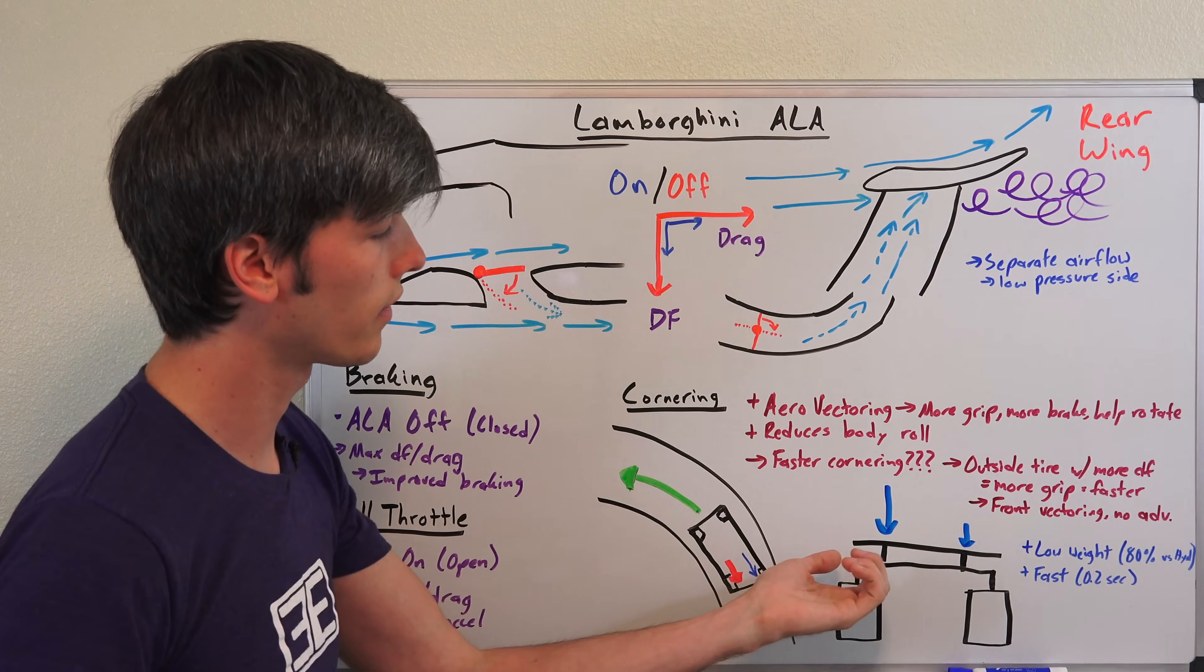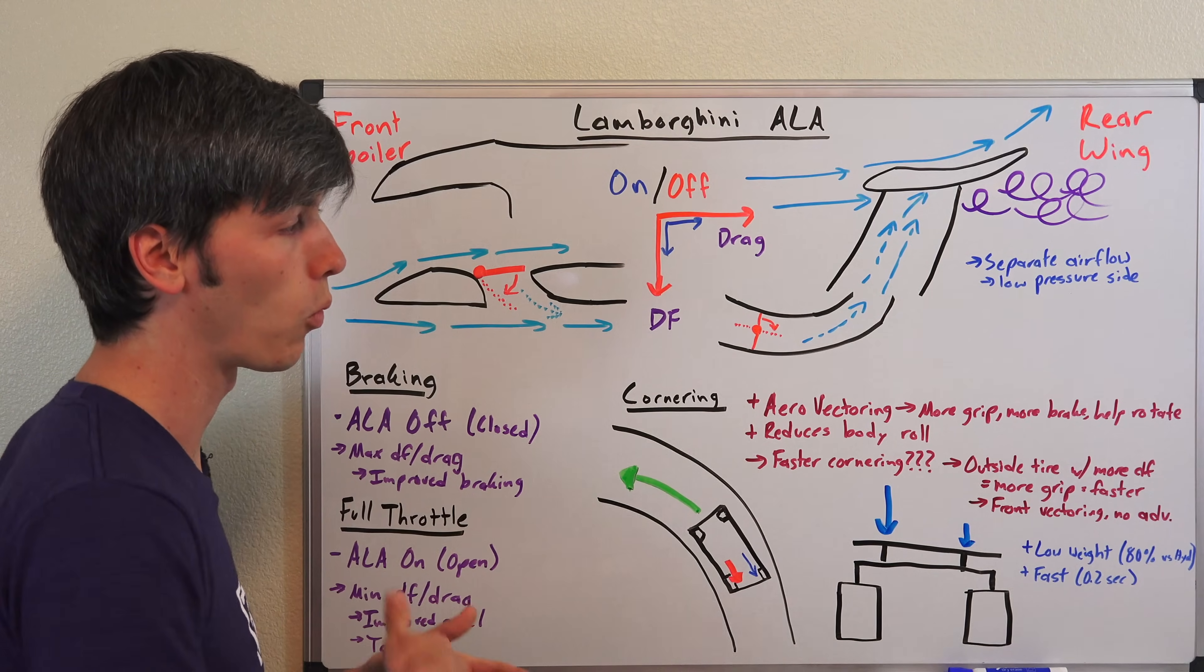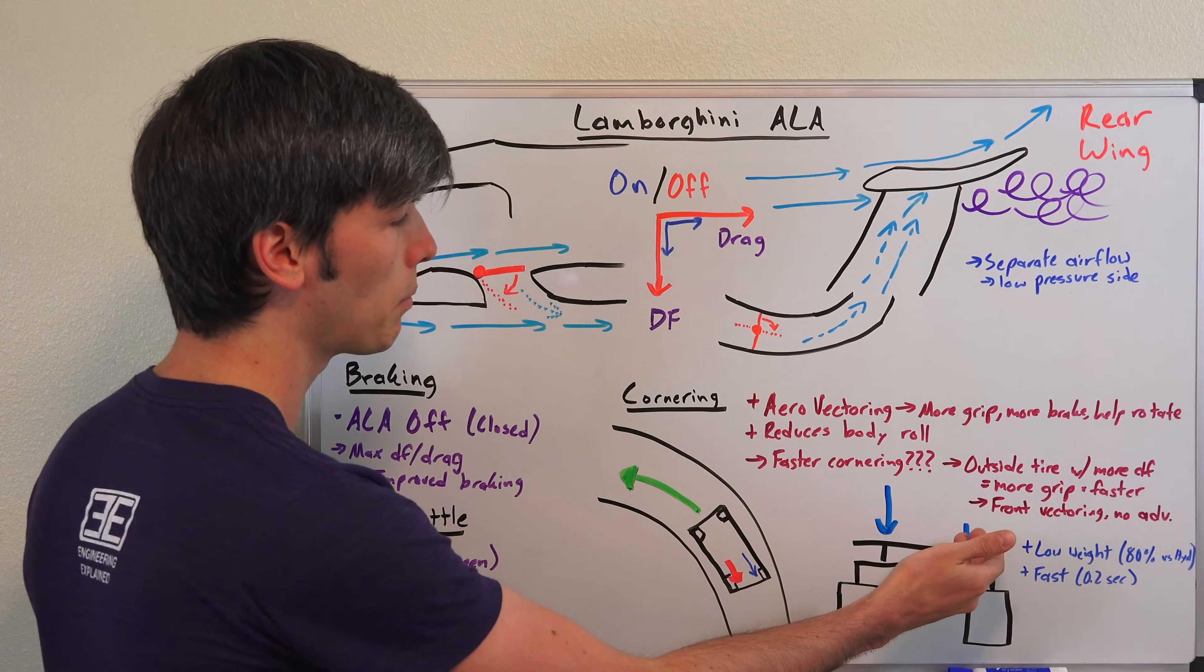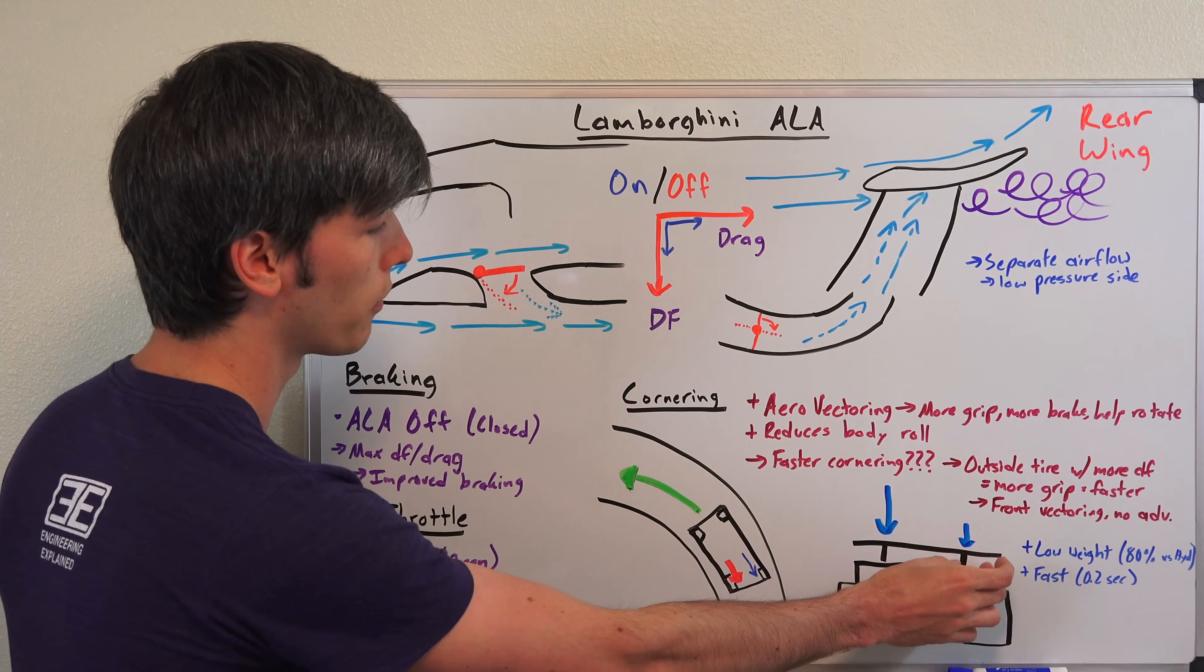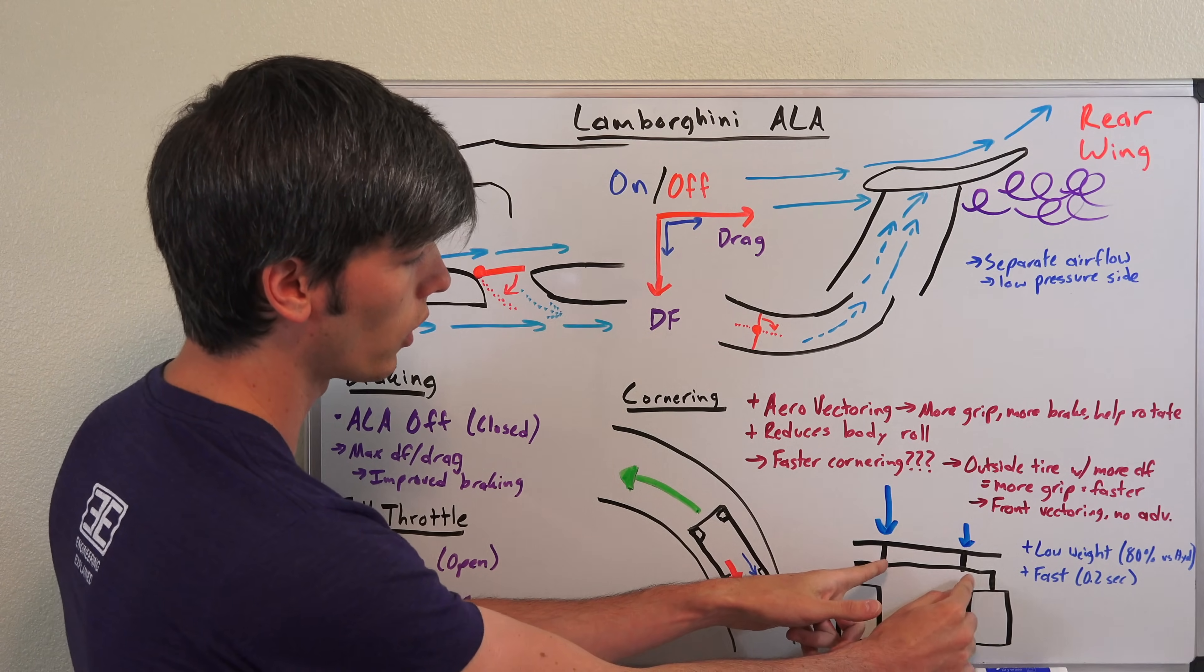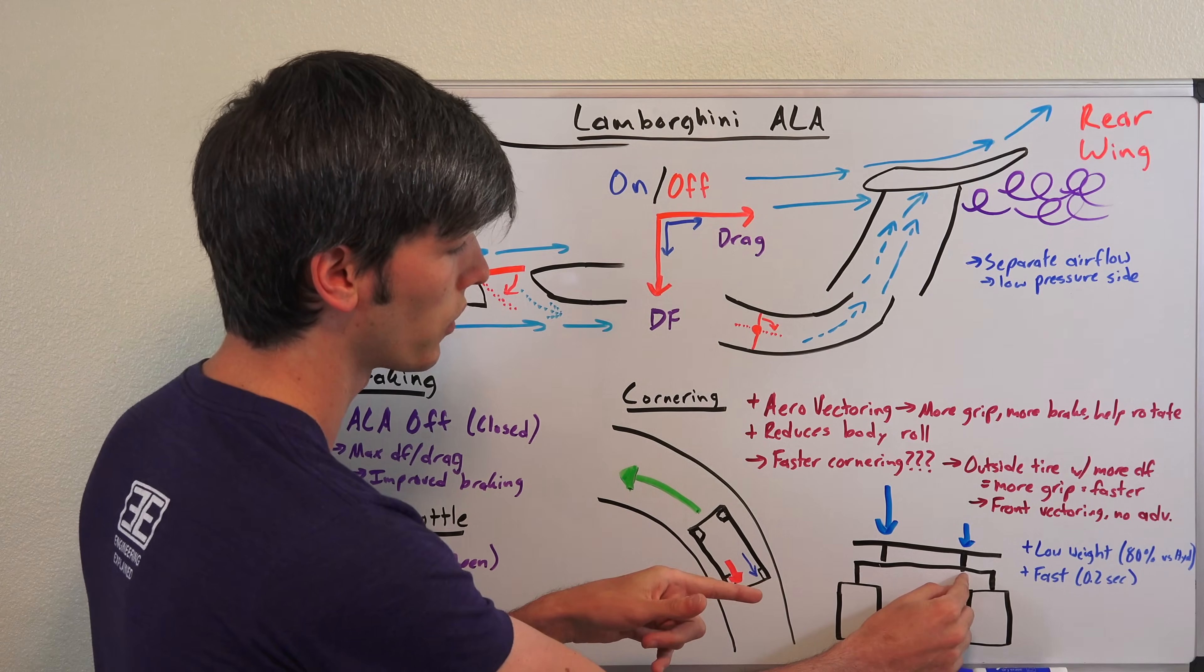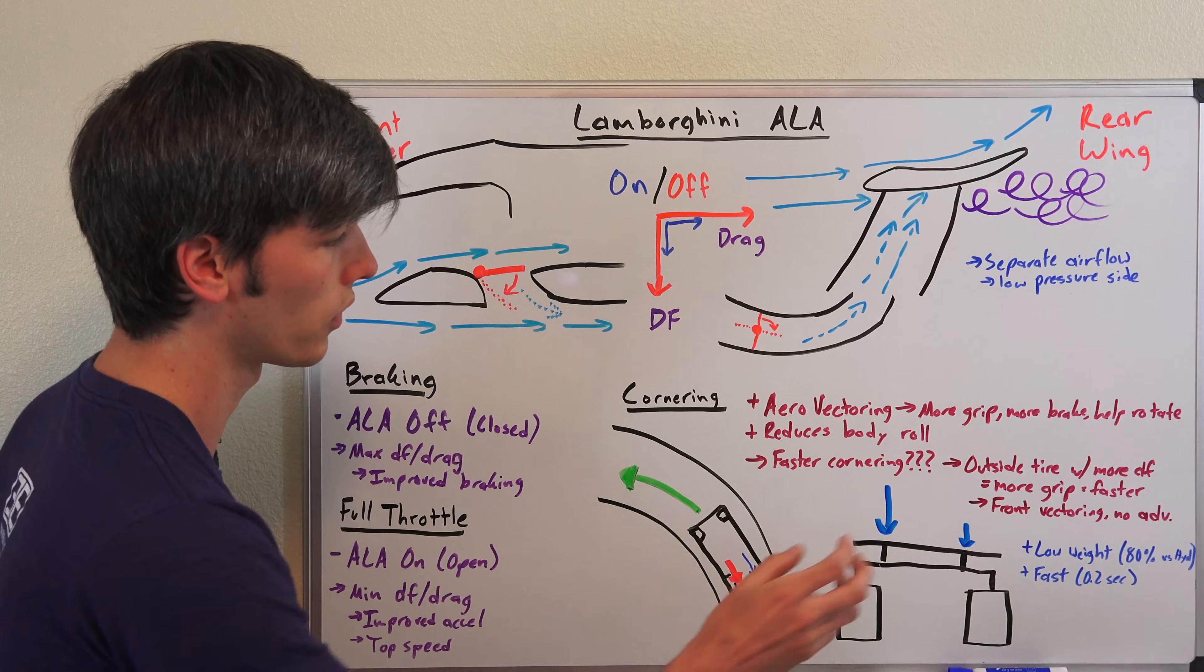Because if you have more downforce on the inside and less downforce on the outside - if your outside tire were to have more downforce which it's capable of because you've opened up that flap behind it, you've got flaps on each side. So you can open one here and you can leave one closed here. So this has a lot of downforce and this one has less downforce, less drag. You could close this, have more downforce, give the outside tire more grip and then in theory corner faster because you have overall more downforce.